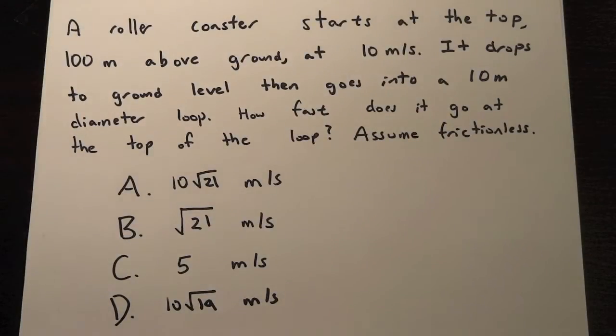Today we have a physics question of the day. It's asking: a roller coaster starts at the top, 100 meters above ground, going at 10 meters per second. It drops to ground level then goes into a 10 meter diameter loop. How fast does it go at the top of the loop? Assume this is frictionless.